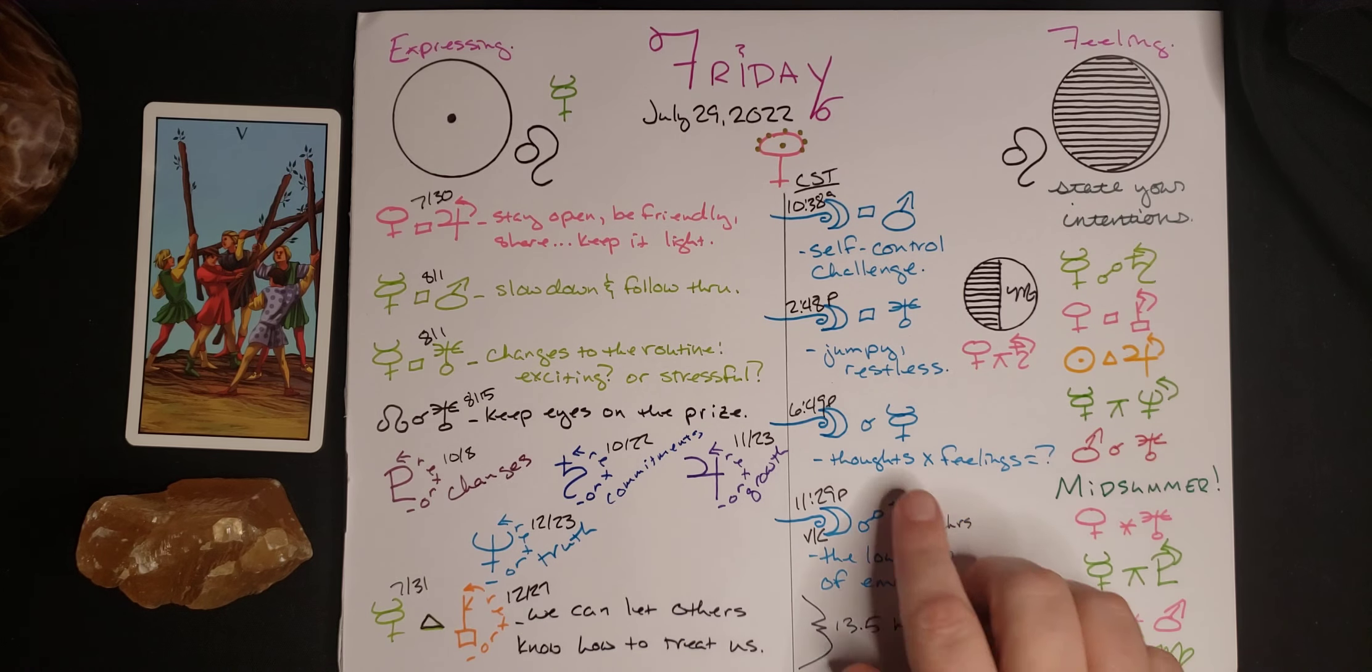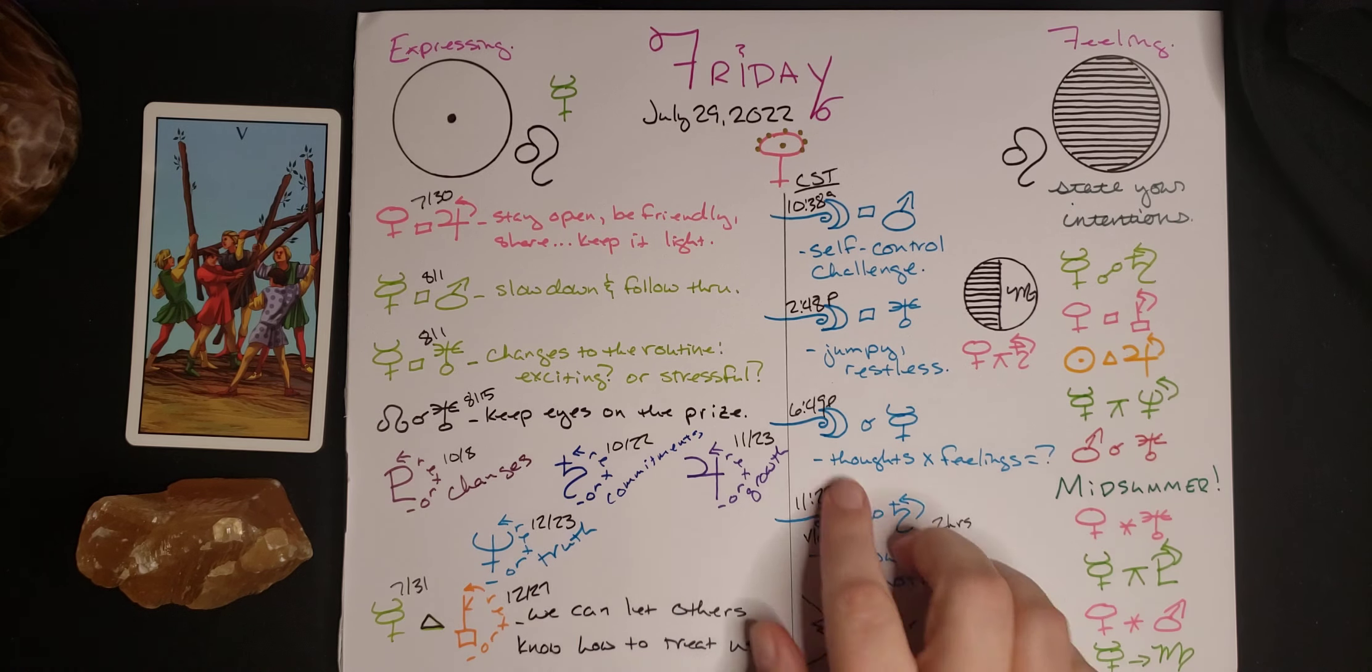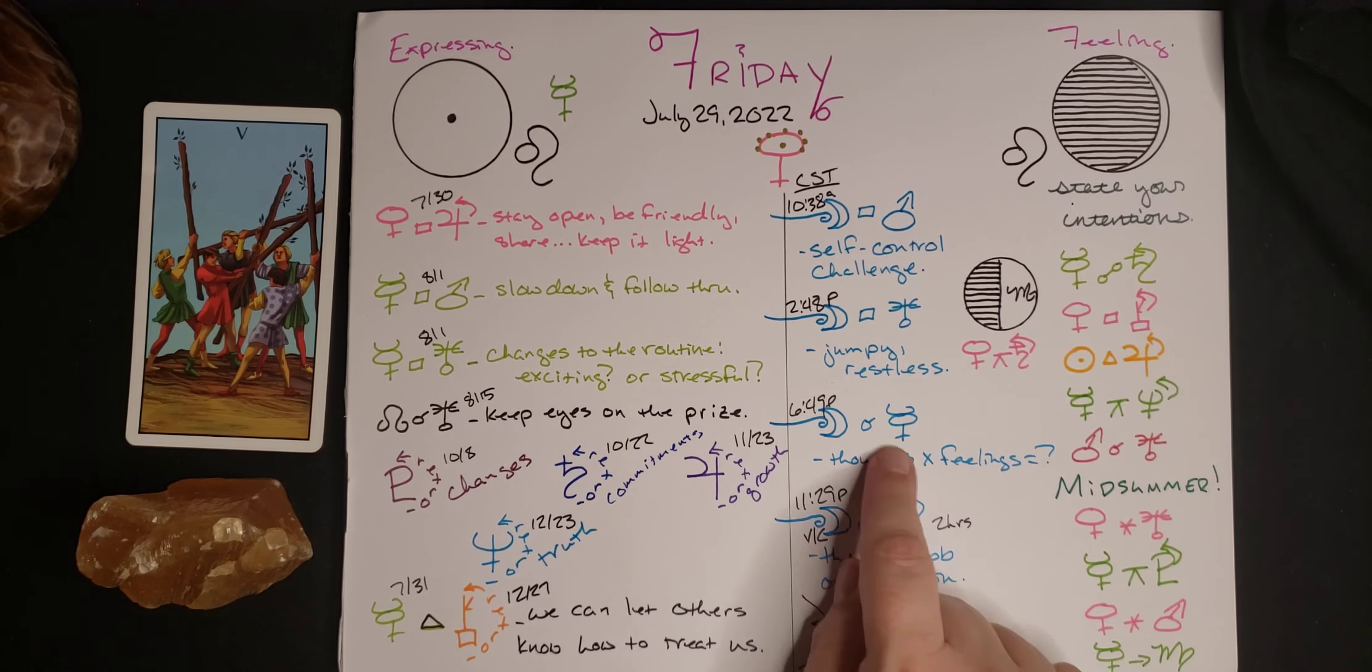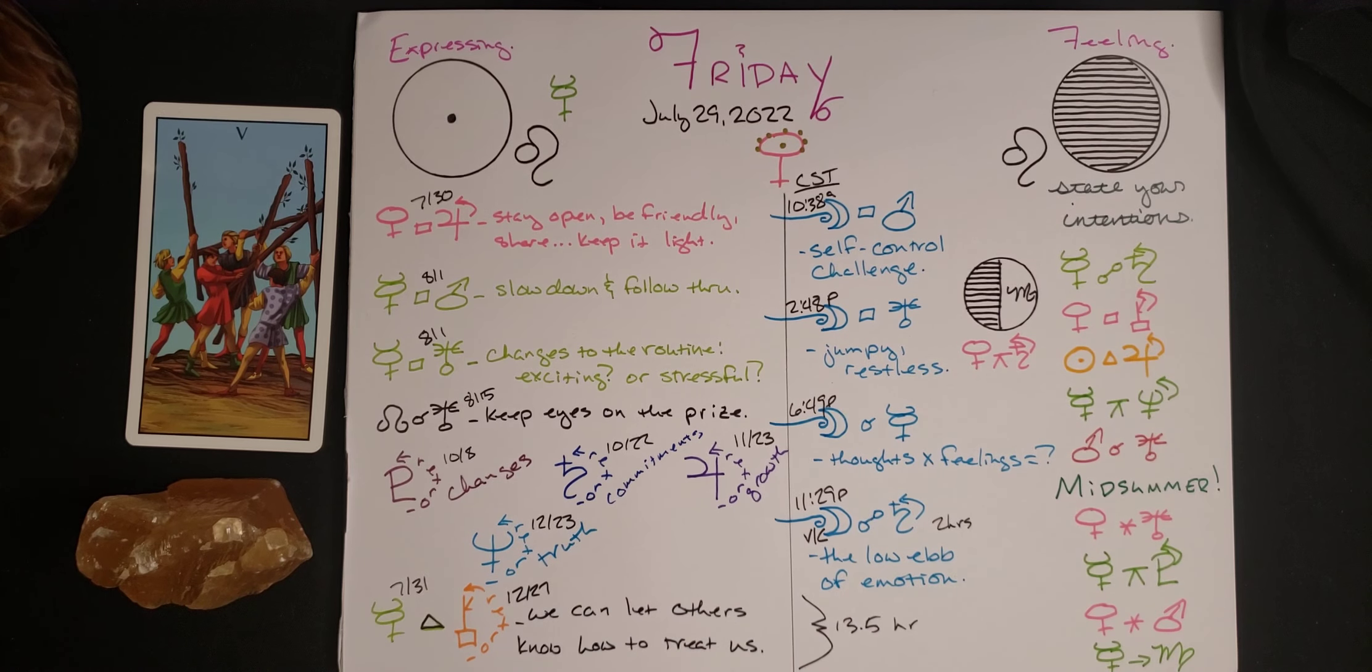Moon goes conjunct to Mercury this evening, close to seven o'clock. And this is our thoughts under pressure intensified with our feelings. It can be hard to tell the difference between our thoughts and feelings. And honestly, we might just feel compelled to speak up and spit out whatever it is on our mind and just deal with the consequences.